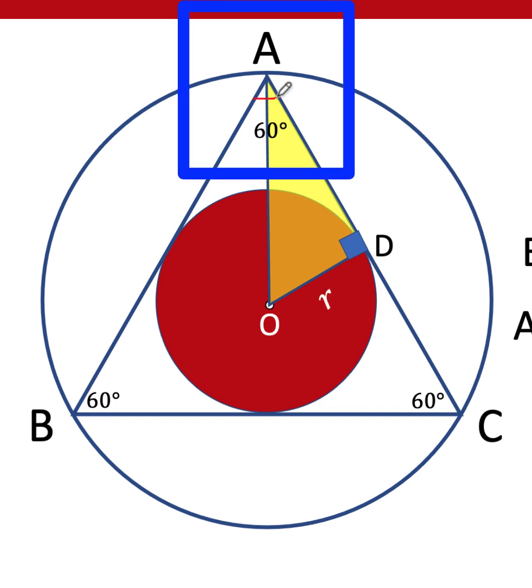Since this angle here is bisected by segment AO, this means that the angle formed here is equal to 30 degrees. And since this is 90, it implies that this central angle here is equal to 60 degrees. So we have a 30-60-90 triangle.